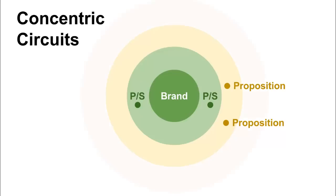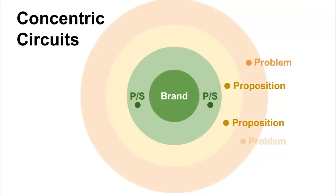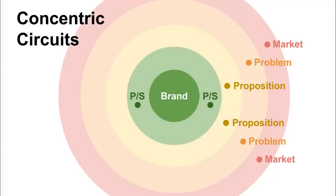A proposition should really address one major problem, and on the outside we've got the market — the group of people who share that problem. It may be helpful to picture the brand at the center with multiple circuits reaching out like spokes to the market in different ways, each one needing integrity — products and services matching the brand, propositions connecting them to specific problems, and a clearly identified market.